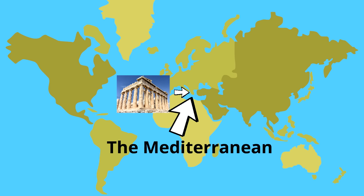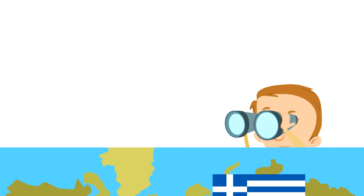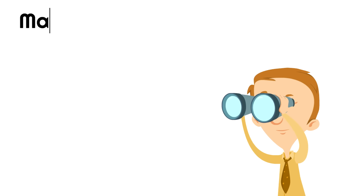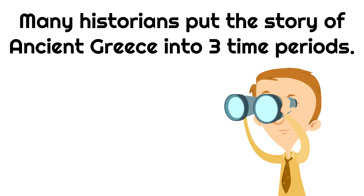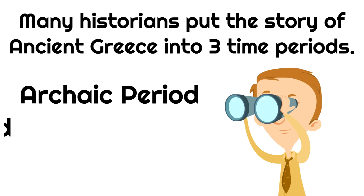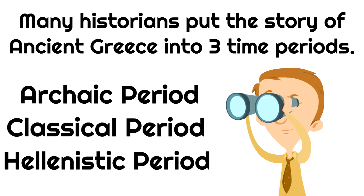It's still called the Mediterranean basin today, and in fact where ancient Greece was is where modern-day Greece is. Here is the flag of the country of Greece. Many historians put the story of ancient Greece into three time periods: the archaic period, the classical period, and the Hellenistic period.